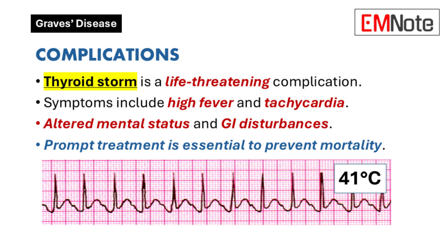Complications: One significant complication associated with Graves' disease is thyroid storm, a life-threatening exacerbation of hyperthyroidism. Symptoms of thyroid storm include high fever exceeding 102 degrees Fahrenheit and tachycardia with heart rates greater than 140 beats per minute.